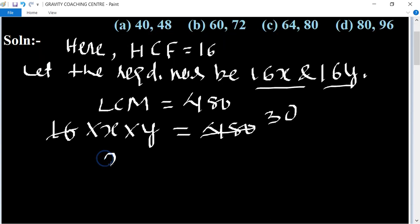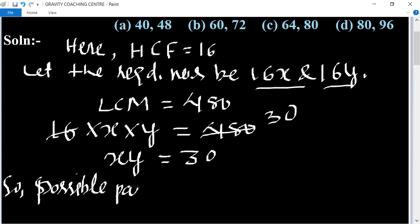So therefore xy equal to 30. Such possible pairs are either (5,6), (15,2) where 15 into 2 is 30, and (3,10) where 3 into 10 is 30, and (30,1).